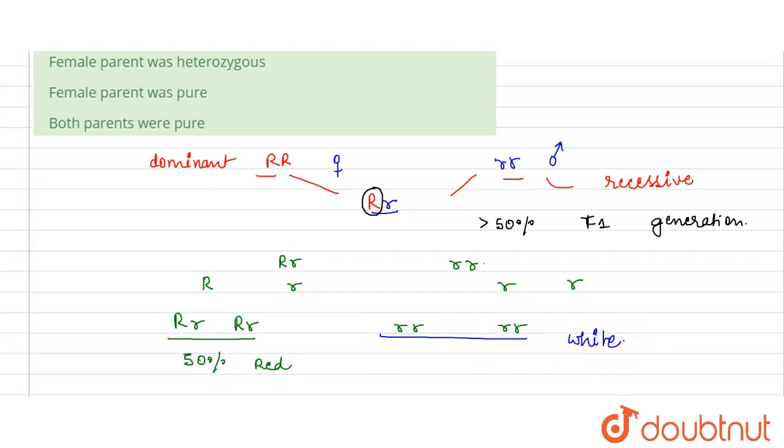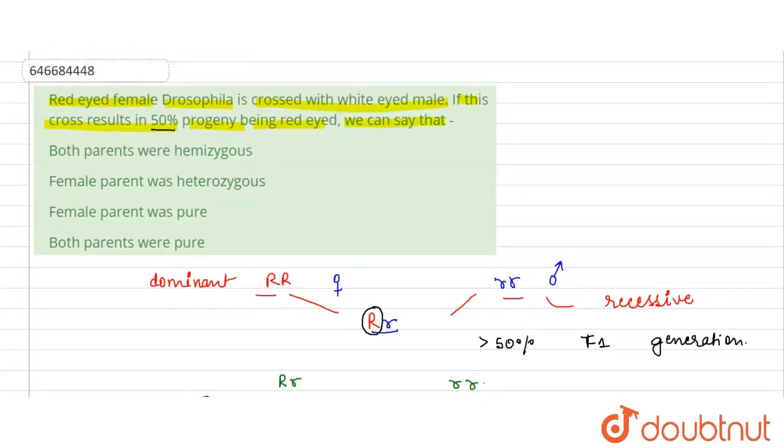So 50% are red, 50% are white-eyed. So this result can show that one parent is heterozygous—that is, the female parent was heterozygous in nature, and this was the reason that we got 50% of the progeny as red-eyed.